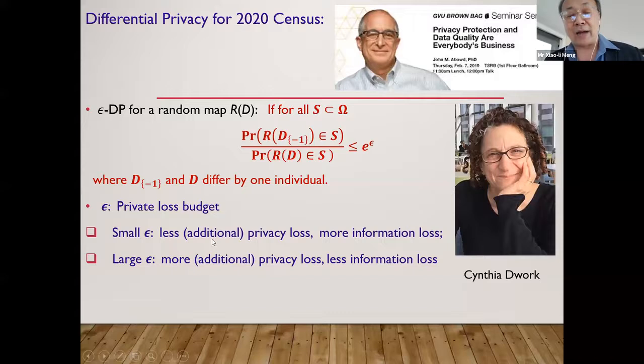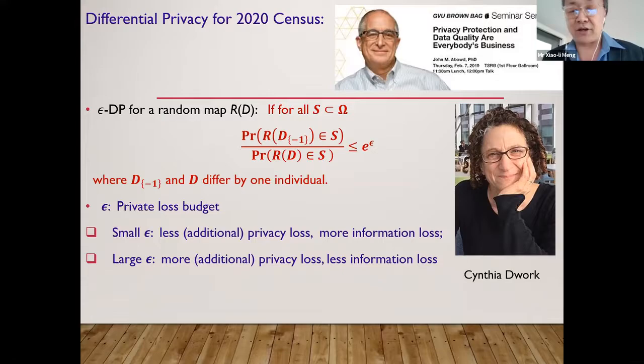This whole thing is about additional privacy: whether by releasing data, whether they have additional threat to you. So you can see this epsilon privacy loss budget is a very important concept, because it basically governs in a technical sense the trade-off between the privacy loss and the information loss.